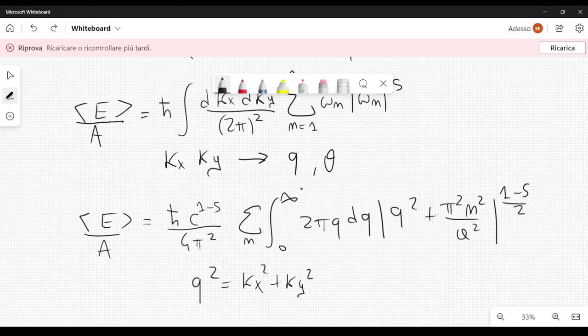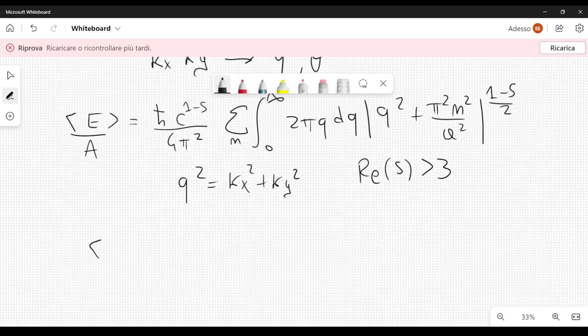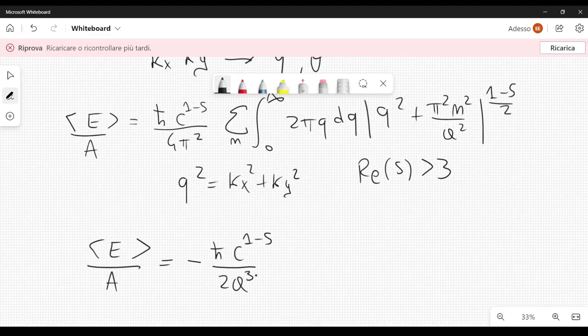So, we integrate over theta. And, the integral here is easy to calculate, and actually, it converges if the real part of s is greater than 3. And, the result is the following, it is quite easy to calculate, you have e divided by area equal to minus h-bar, c to the power of 1 minus s, over 2a to the 3 minus s, 1 over 3 minus s, summation over n, absolute value of n to the power of 3 minus s, like this.